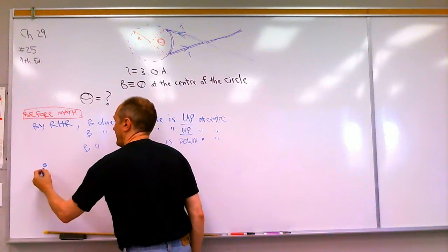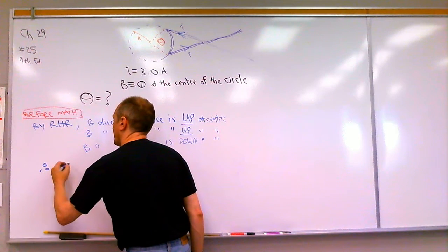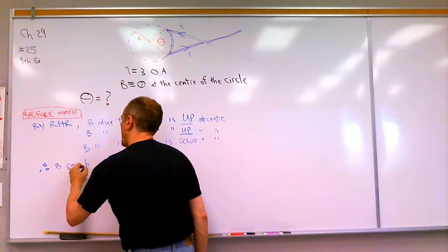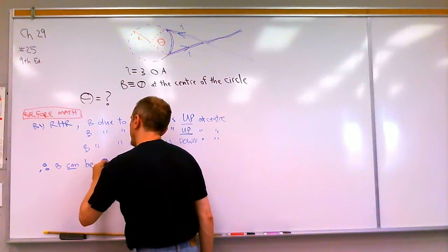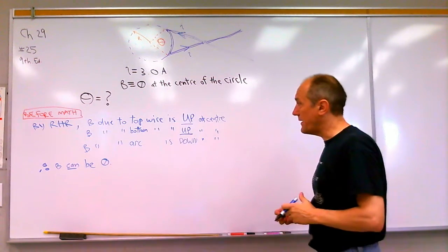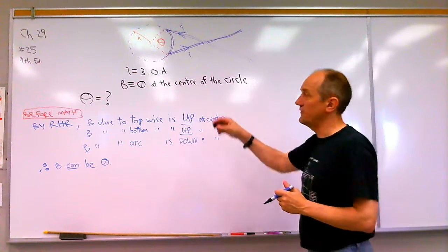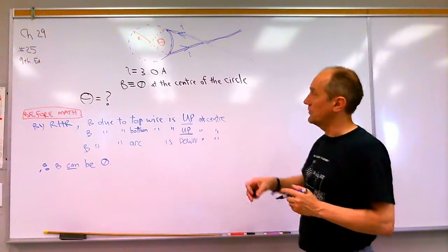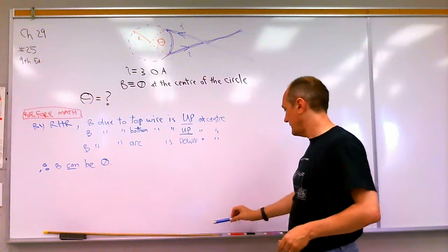It's possible that the magnetic field can be zero at the center of the arc, at the center of the circle. So now we're going to see what we can do.